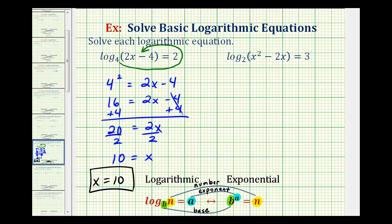Looking at our second equation, we're going to do the same thing. We'll convert this to an exponential equation and then solve for x. So our base is two, our exponent is three, and our number would be the expression x squared minus 2x. So two raised to the third power must equal x squared minus 2x.